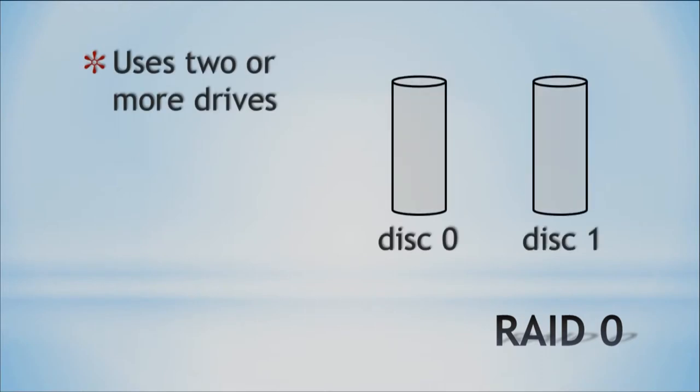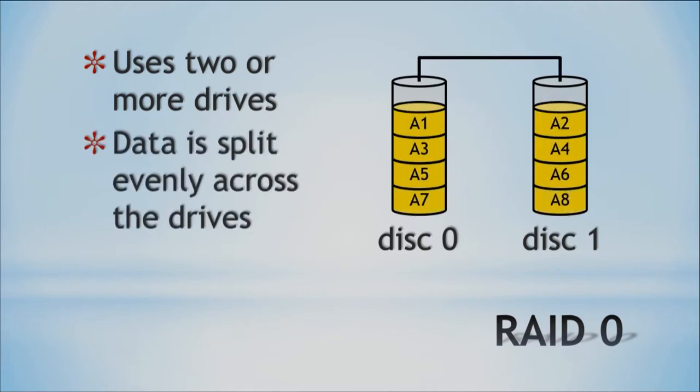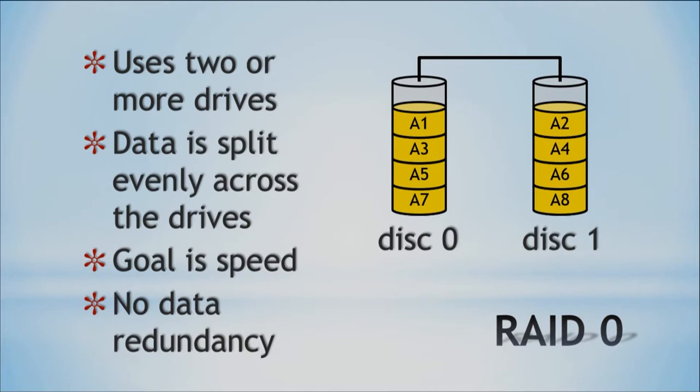The first RAID level is RAID 0, which uses two or more drives. You can see here we have disk 0 and disk 1, and the data is going to be evenly split across the drives. The goal of RAID 0 is speed — instead of writing to one disk, we're writing to two disks. However, we don't have any data redundancy with RAID 0. If a hard drive crashes, you're going to lose your data. RAID 0 is great for providing speed, but it doesn't provide any redundancy or security.